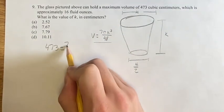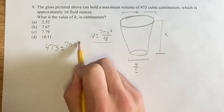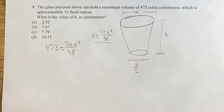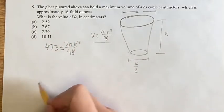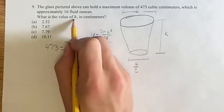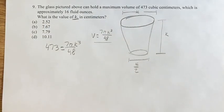If 473 is equal to 7 pi k cubed over 48, now we just have one equation with one variable. We can solve for that variable, which is what we're actually looking for in the problem in the first place.